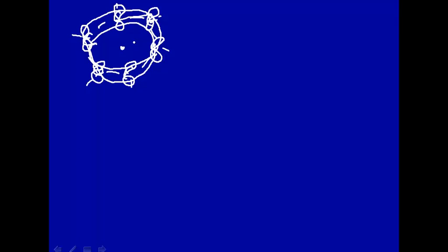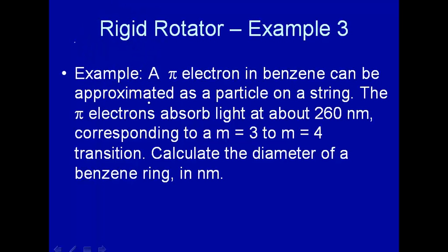Let's see if the particle on a string works by trying to calculate the radius here, the radius of orbit, or essentially half the diameter of the benzene ring. The pi electron absorbs light about here, and we're going to say that corresponds to an m equals 3 to m equals 4 transition. Calculate the diameter of the benzene ring in nanometers.